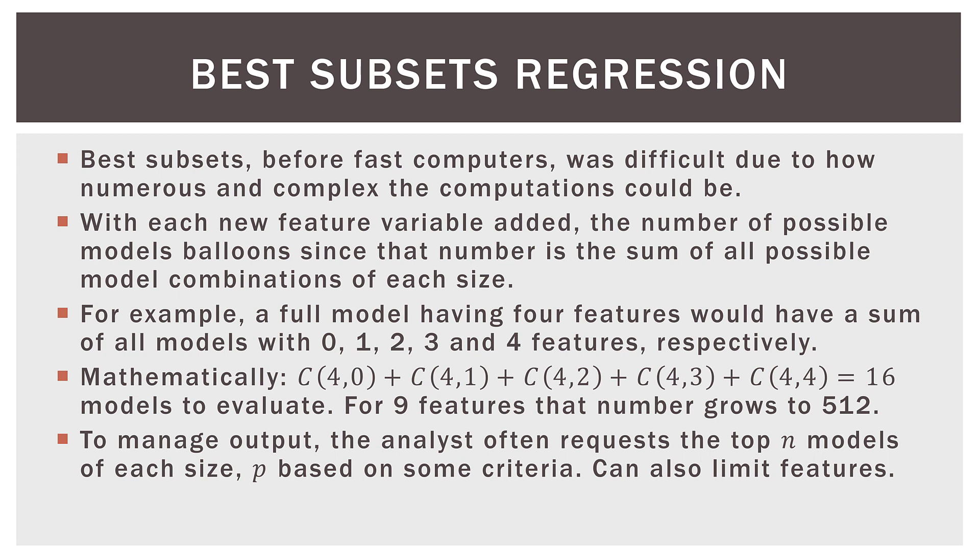To manage the output, the analyst often requests the top N models — so the top two or three models of each variable size, which we call P. That's what we have here: zero variables, one variable, two, three, and all four. We can also limit the number of features. So if we only wanted a model with a maximum of two variables, we could just look at the first three combinations and tell the software to eliminate the last two. We limit the number of features in the model as one way to limit the output, and we can limit the number of models we get for each number of feature combinations.